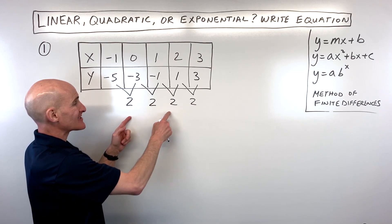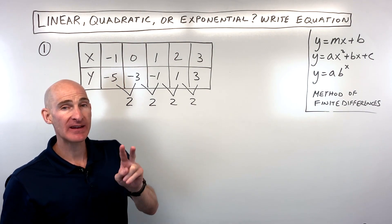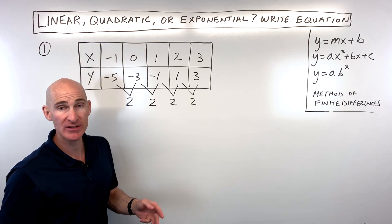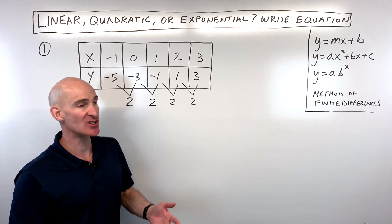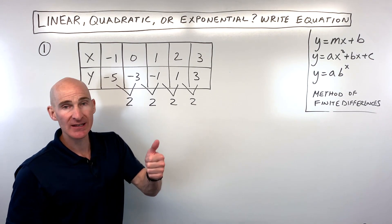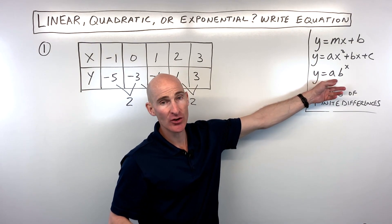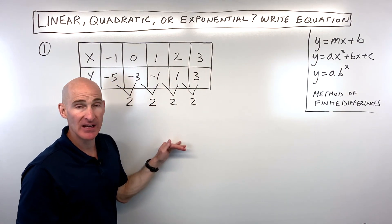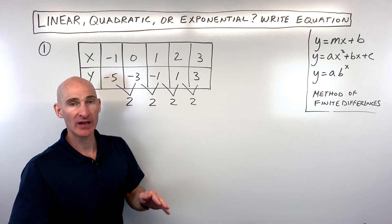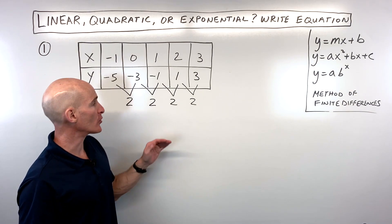If you had to subtract a second time to get a constant, that tells you it's a second degree polynomial equation. If you had to do it a third time, it would be a third degree — a cubic equation, and so on. As for an exponential function, you could keep doing the method of finite differences forever and it will never give you that constant like you get with first, second, or third degree polynomial equations.